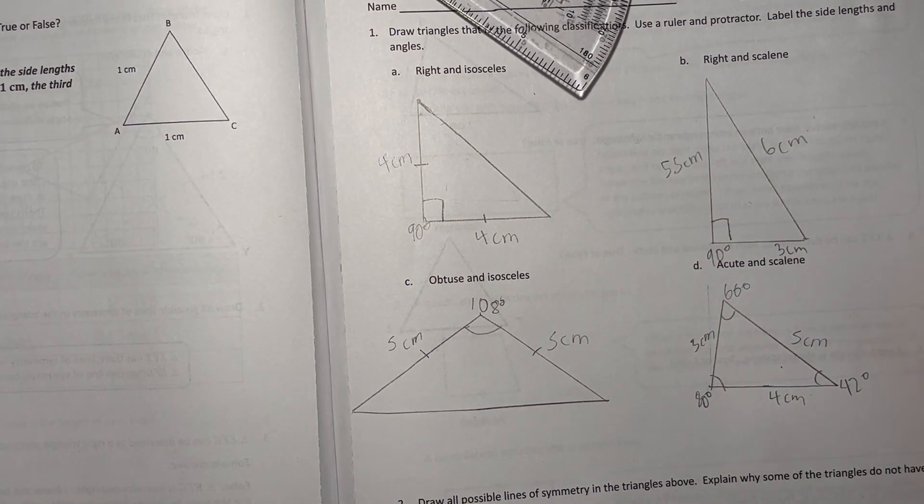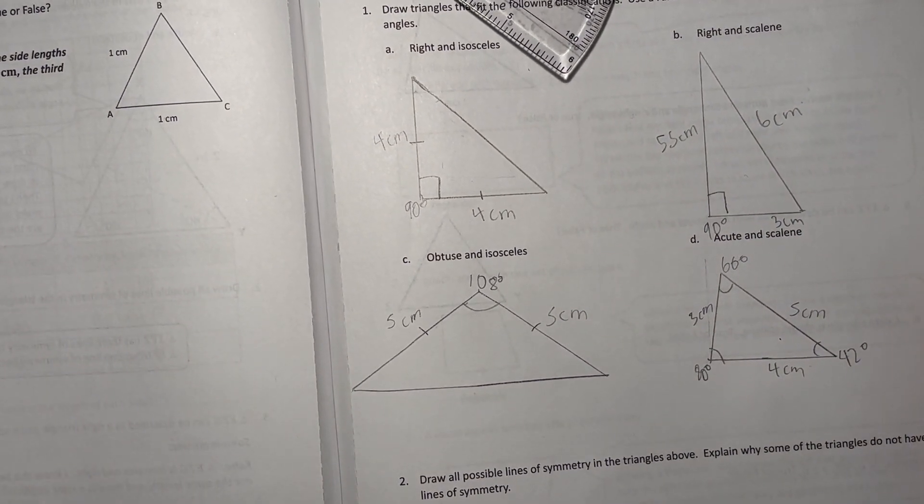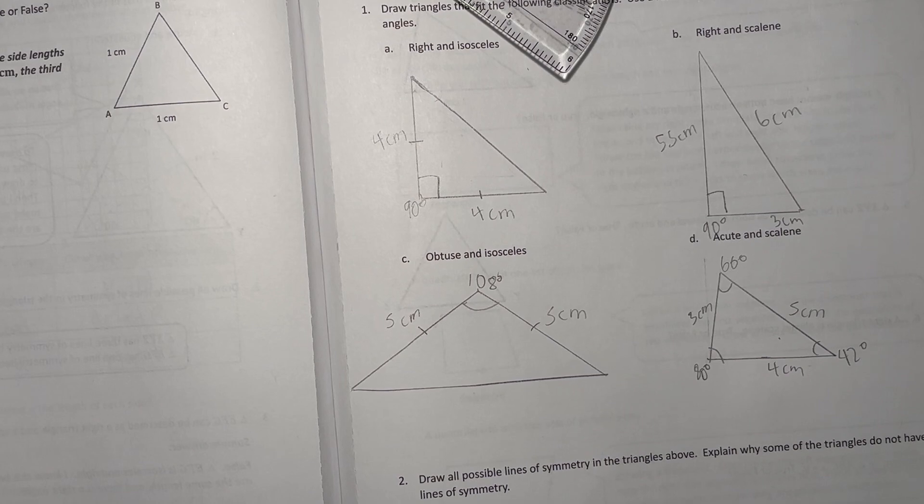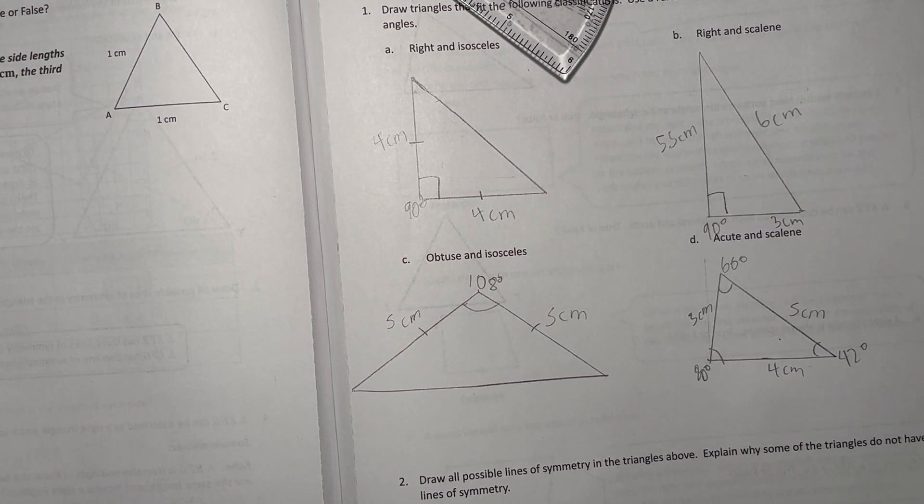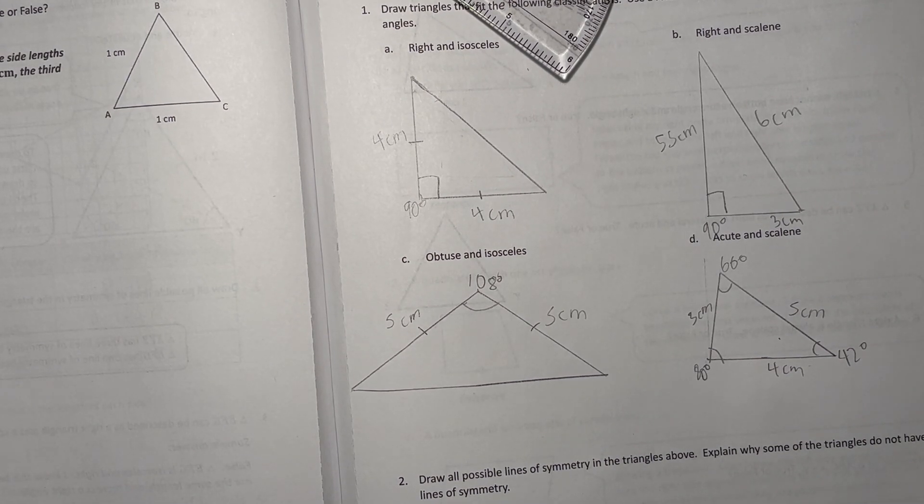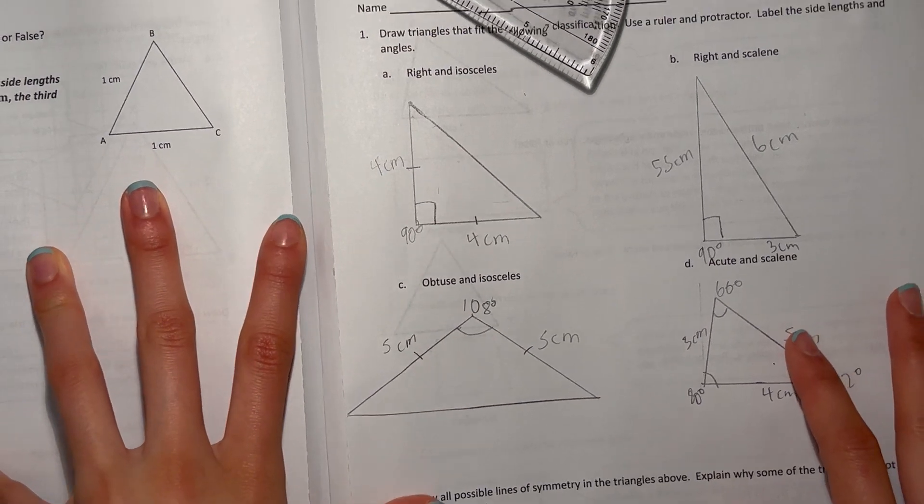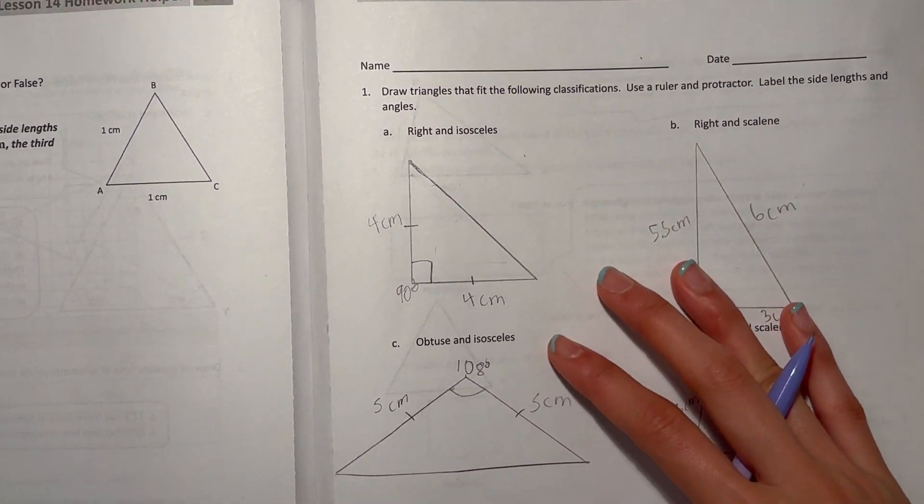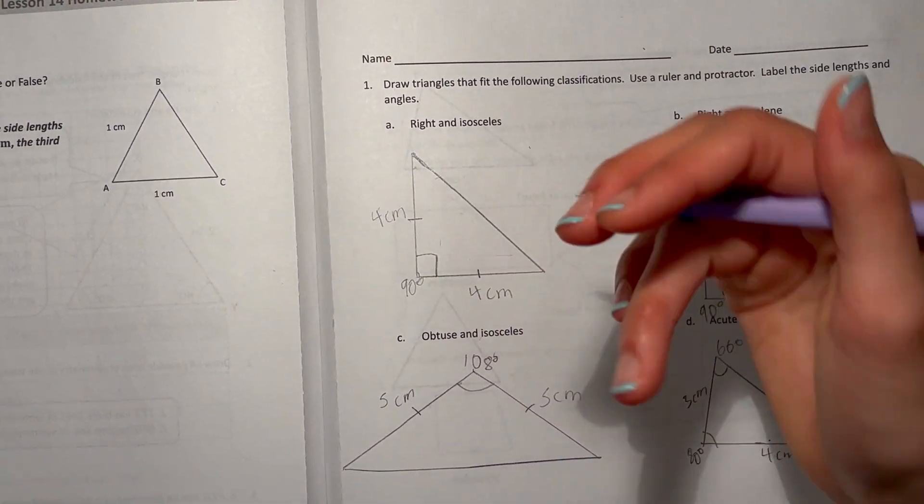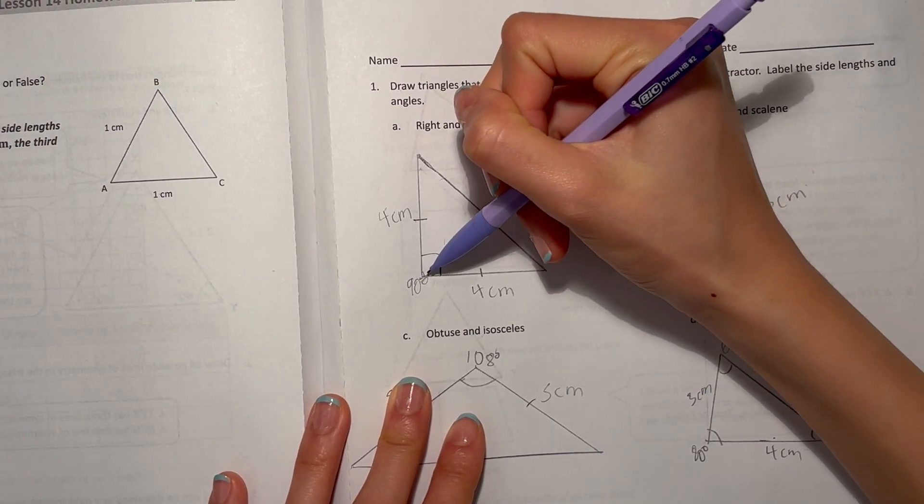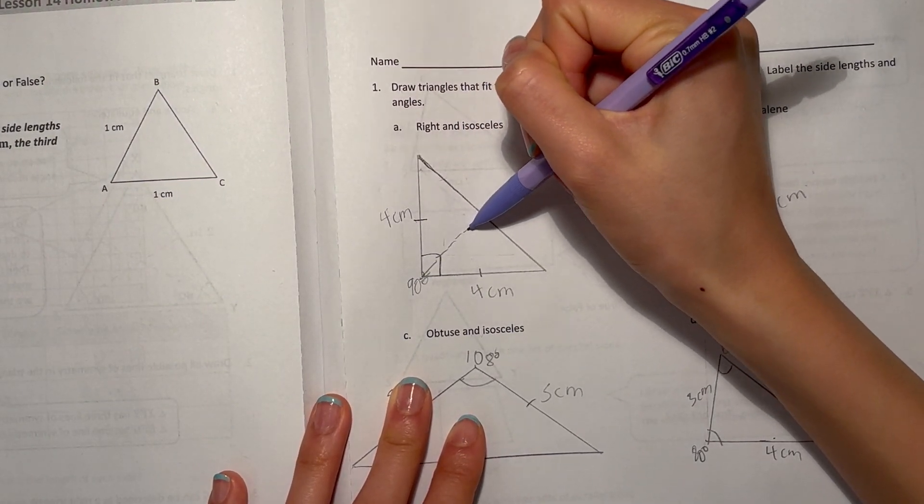So yeah. All right, and number two says: draw all possible lines of symmetry in the triangles above. Explain why some of the triangles do not have lines of symmetry. All right, so our first triangle, we can go across. So this is our line of symmetry, can be a dotted line.